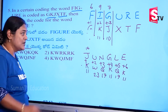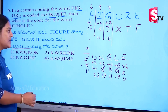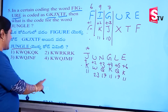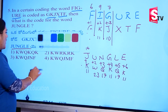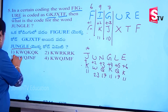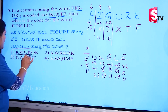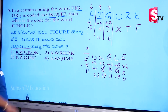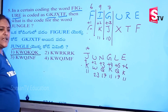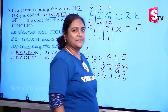So the answer is K, W, Q, K, Q, K. The question is: K, W, Q, K, Q, K. The first option is only this.